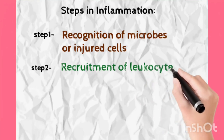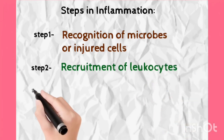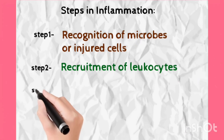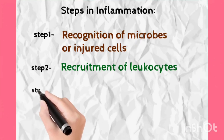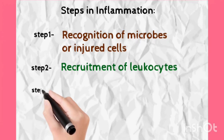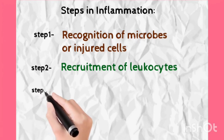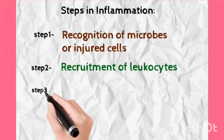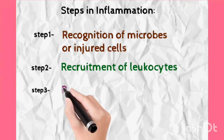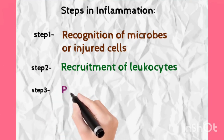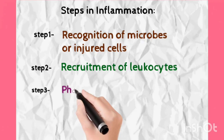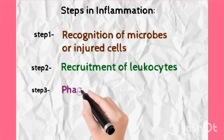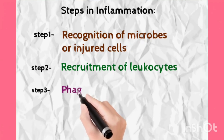The third step is killing. Just as in a battle the army goes to fight, our body uses phagocytosis against the offending agent — whether microbes or sutures or whatever it may be — and phagocytoses them. Phagocytosis means cell eating.